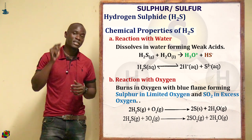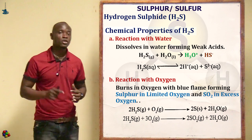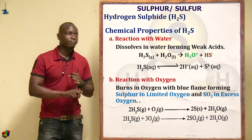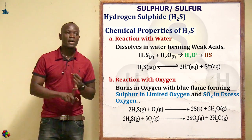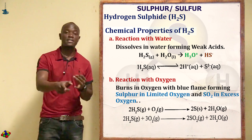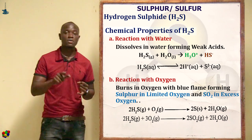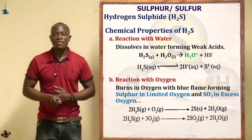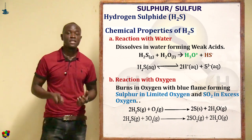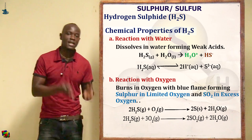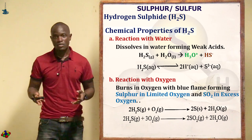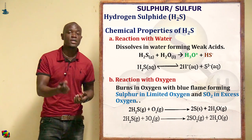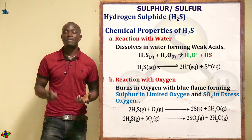For the chemical properties of hydrogen sulfide — the first is dissolution in water. It dissolves in water to form a weak acidic solution, including sulfurous and sulfuric acid. Aqueous hydrogen sulfide is a very weak dibasic acid, meaning it forms two types of salts: hydrogen sulfides and sulfides.